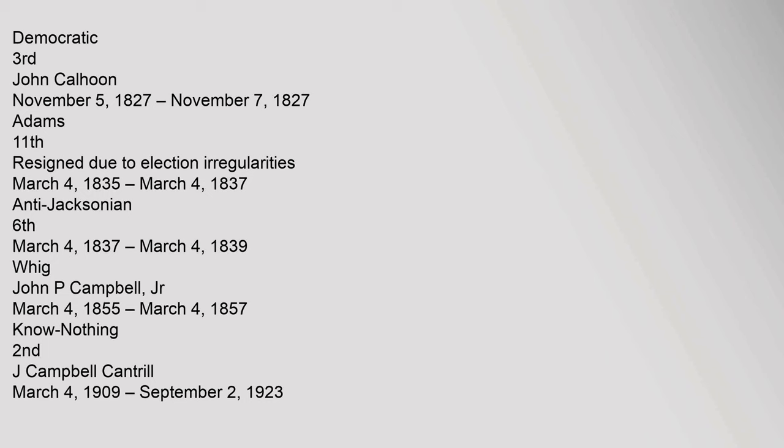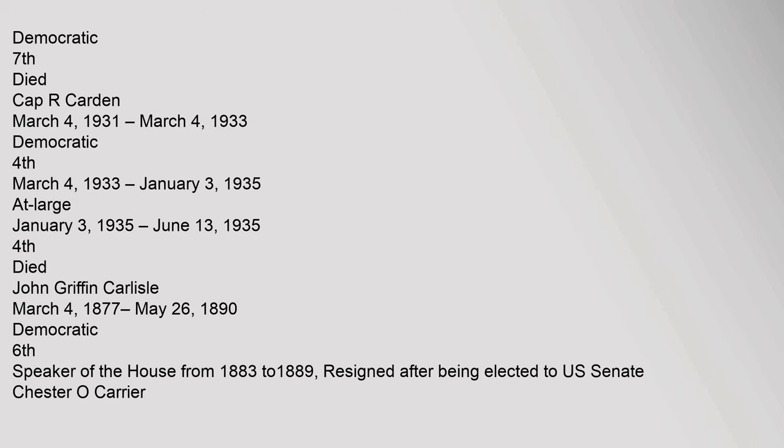John P. Campbell Jr., March 4, 1855 to March 4, 1857, Know-Nothing, 2nd. J. Campbell Cantrell, March 4, 1909 to September 2, 1923, Democratic, 7th, died. Cap R. Carden, March 4, 1931 to March 4, 1933, Democratic, 4th; March 4, 1933 to January 3, 1935, at large; January 3, 1935 to June 13, 1935, 4th, died.